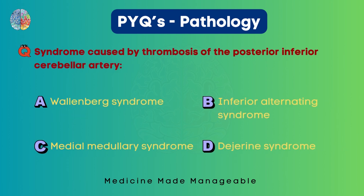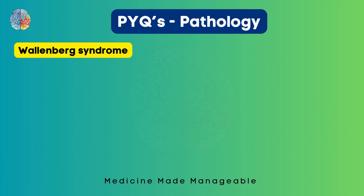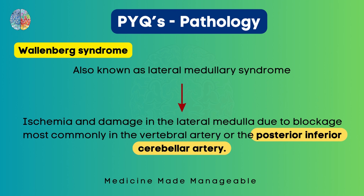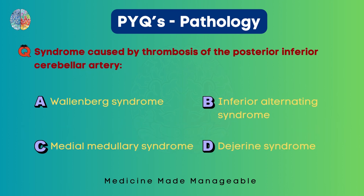The syndrome caused by thrombosis of the posterior inferior cerebellar artery is Wallenberg syndrome, inferior alternating syndrome, medial medullary syndrome, or Dejerine syndrome. The correct option is Wallenberg syndrome, also known as lateral medullary syndrome. The key point is that ischemia and damage in the lateral medulla result from blockage of most commonly the vertebral artery or the posterior inferior cerebellar artery. Correct answer: option A.